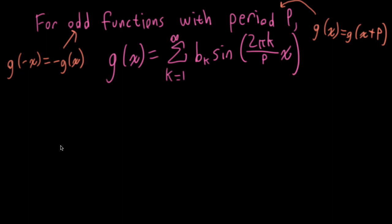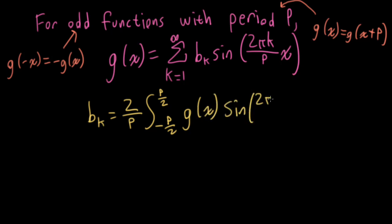Now, if you look this up on Wikipedia, you'll find a Fourier series analysis integral that says we can find the bk by integrating this function over one period. And the period's arbitrary, but it's particularly convenient to integrate from minus p over 2 to p over 2. So you integrate this function times sine 2 pi k over p x.